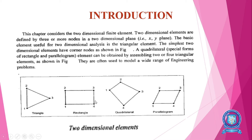In a triangular element, the minimum number of nodes is three. Likewise, in a rectangular element: four, quadrilateral element: four, and parallelogram: four. These are the two-dimensional elements. The quadrilateral element can be obtained by assembling two or four triangular elements. Quadrilateral element is nothing but a special form of the rectangle and parallelogram.